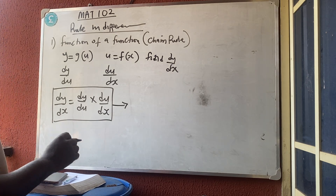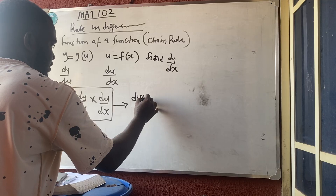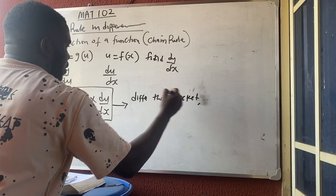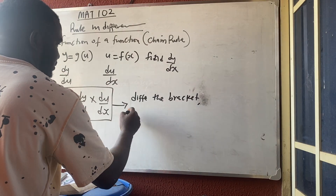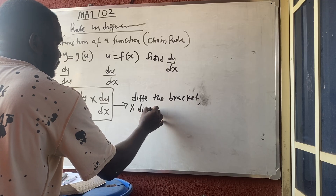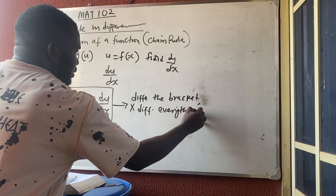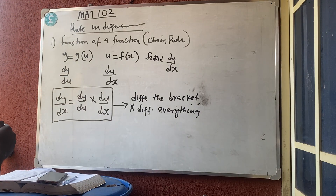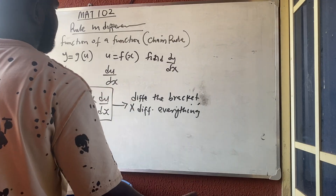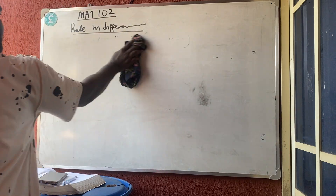The shortcut for the chain rule is: differentiate the bracket, then differentiate everything. Let me show you how to use this with examples.